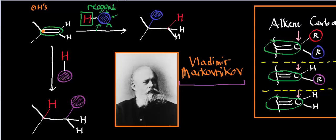What about the right side? How many hydrogens does that have? Well, it has two hydrogens. So the right side has more hydrogens. And what Markovnikov noted was in general, most of these addition reactions have the hydrogen of this reagent adding to the side with the most hydrogens. Notice the red hydrogen added to the side with the most hydrogens.